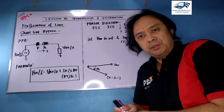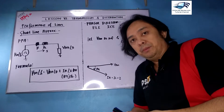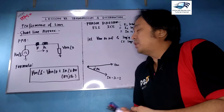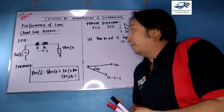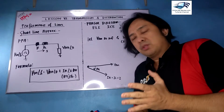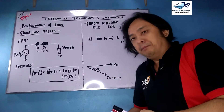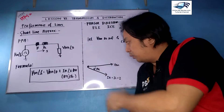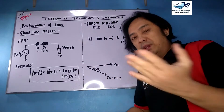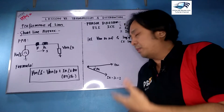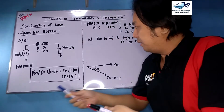Continuing on short line approximation from lesson 6, in the previous slide we discussed what a short line is and the per-phase analysis. In this slide we discuss the formulas and the corresponding phasor diagram, which is very important in determining angles and the performance of voltage and current relationships.